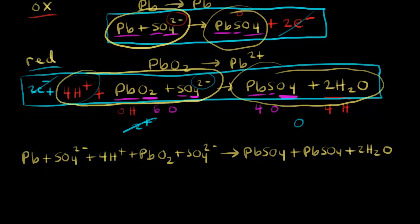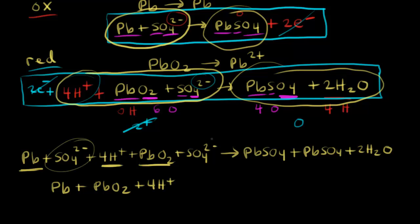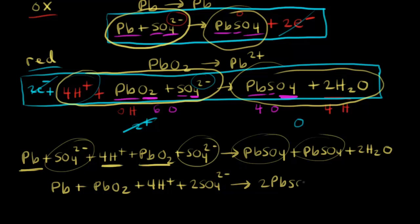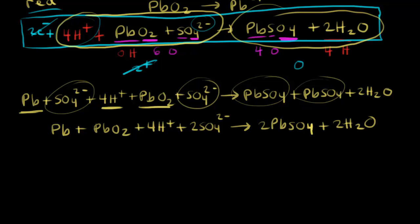Simplifying: on the left we have Pb plus PbO₂ plus 4H⁺ plus 2SO₄²⁻. On the right we have 2PbSO₄ plus 2H₂O. This is our overall reaction for a lead storage battery. Sometimes in a textbook you'll see it written differently: two protons added onto the two sulfates to give 2HSO₄⁻, leaving 2H⁺ remaining — just another way to express the same reaction.